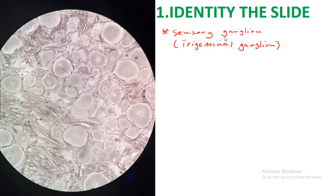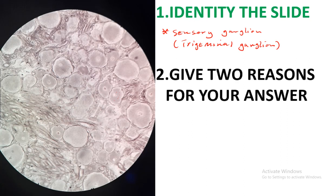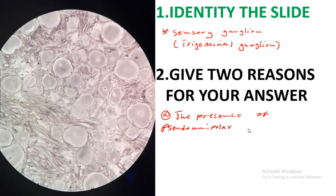The reason we are saying this is a sensory ganglion or trigeminal ganglion is that you can see some neural bodies here, and these neural bodies have dark-stained cytoplasm. The first reason you can give is the presence of pseudo-unipolar ganglion cells.